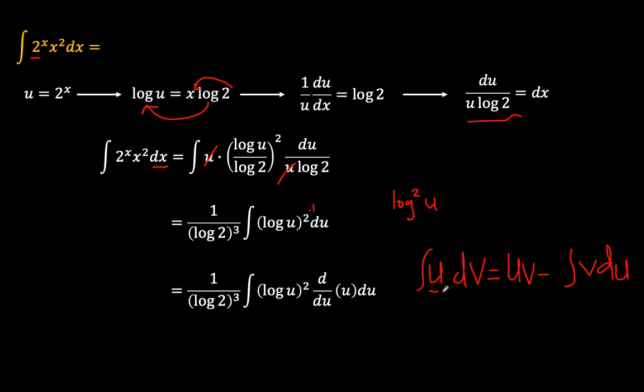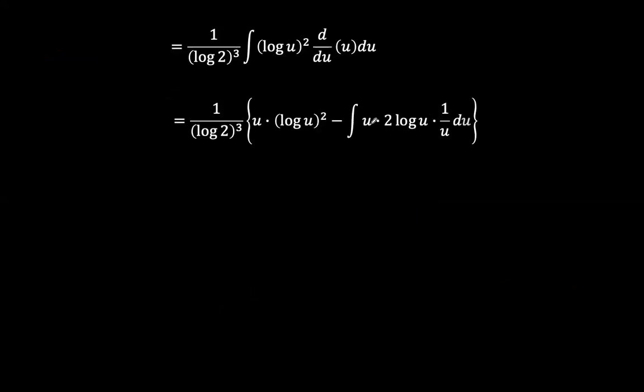Now u here for us is log u squared, and dV is the derivative of u here. So that, now our answer here would be the product of u and v first, which is going to be log u squared times u. And here, minus v du is going to be, since our v is u,